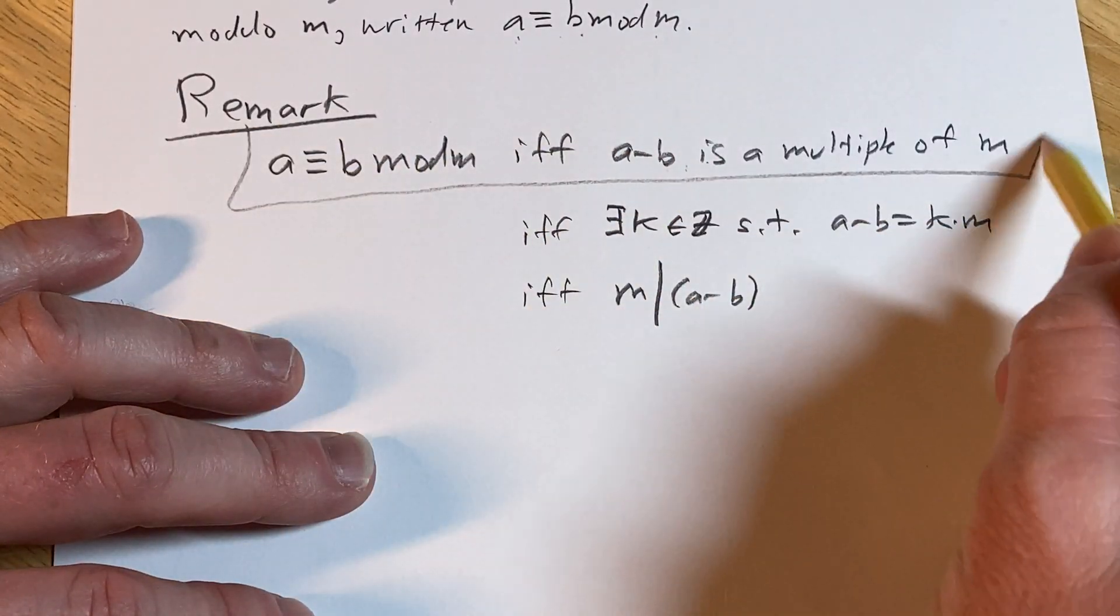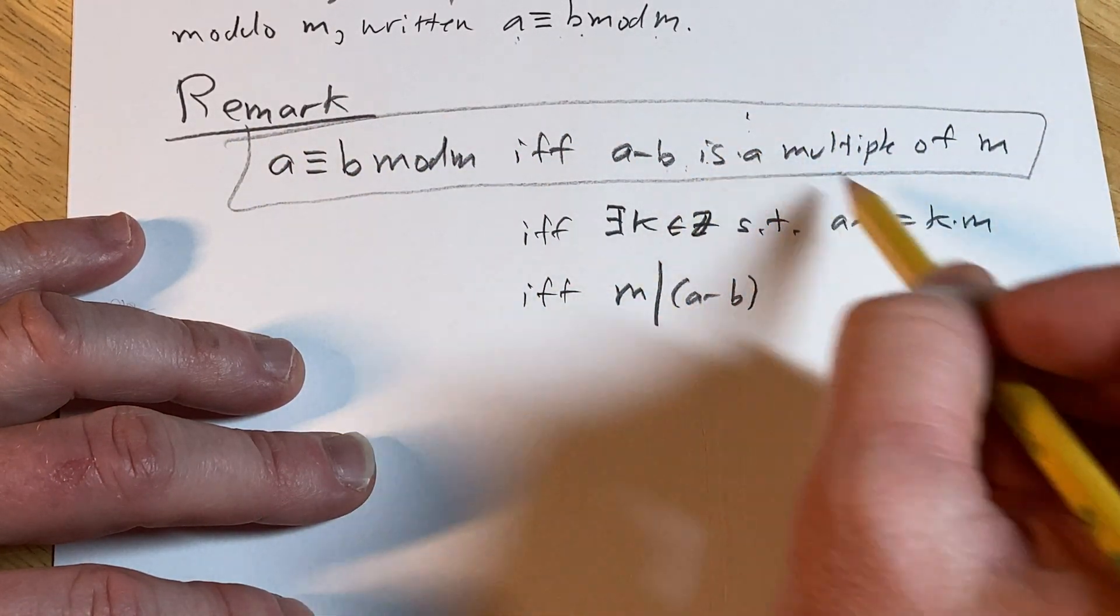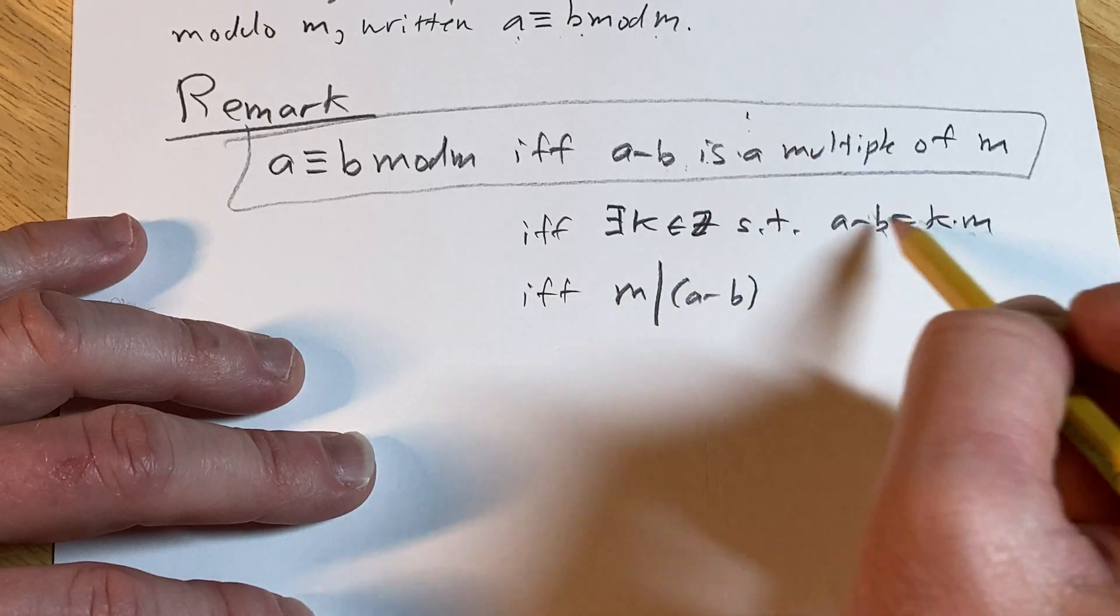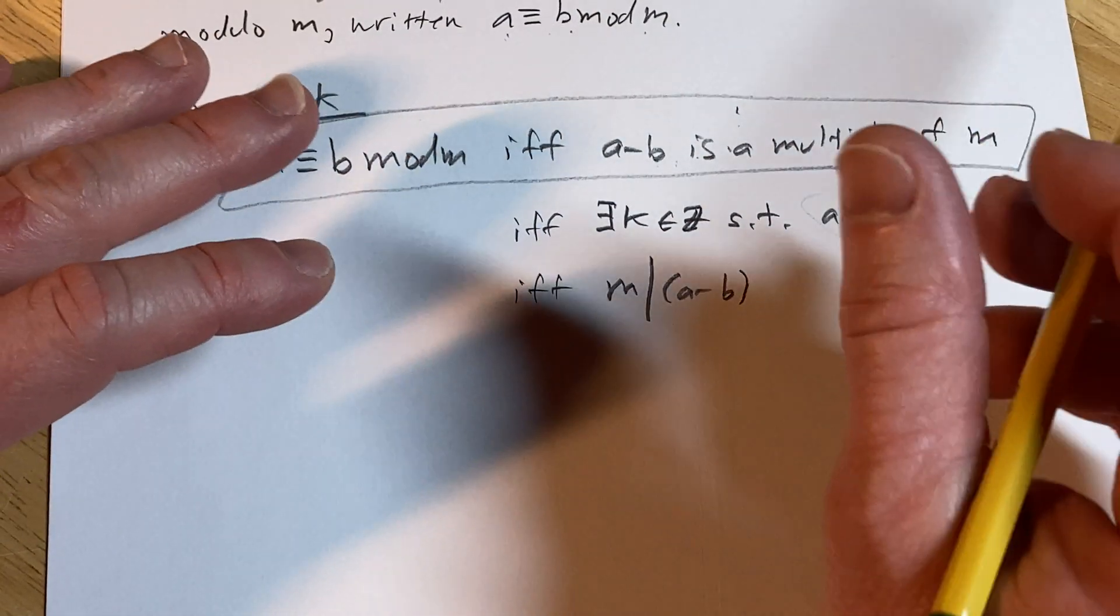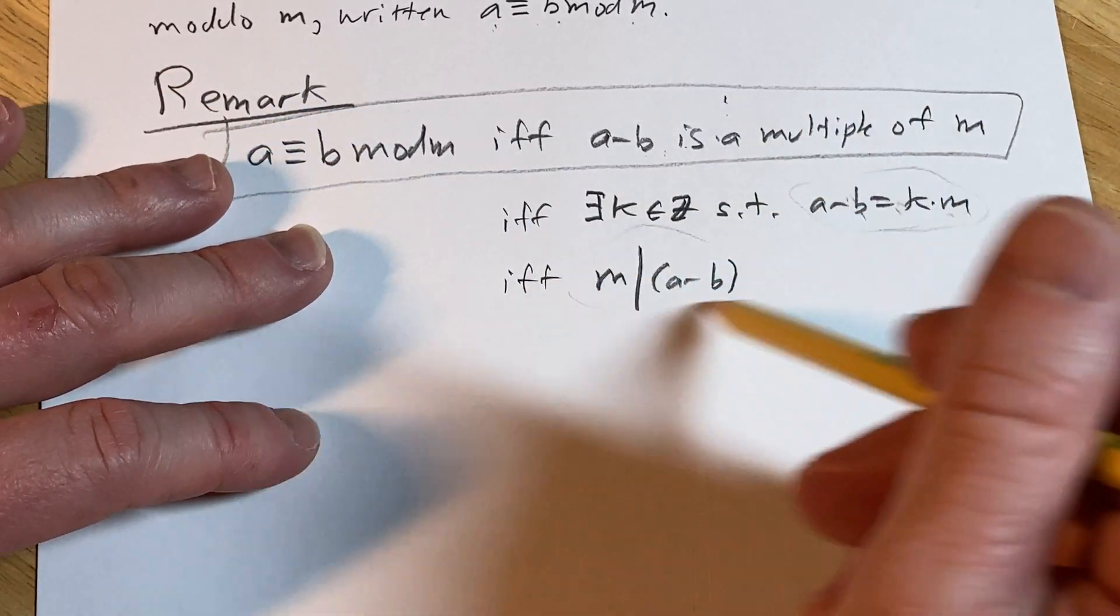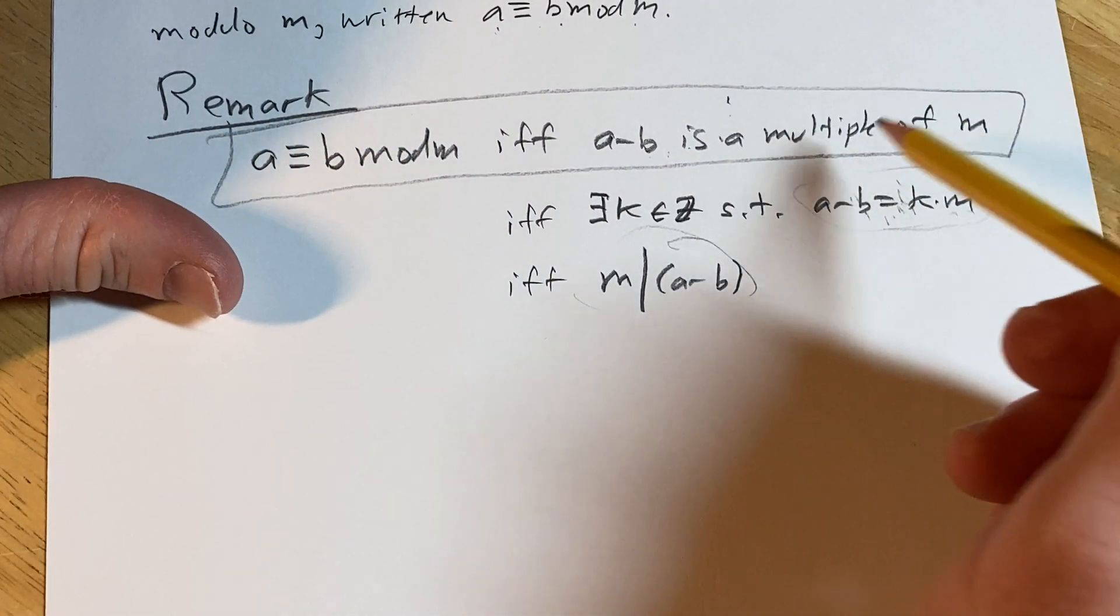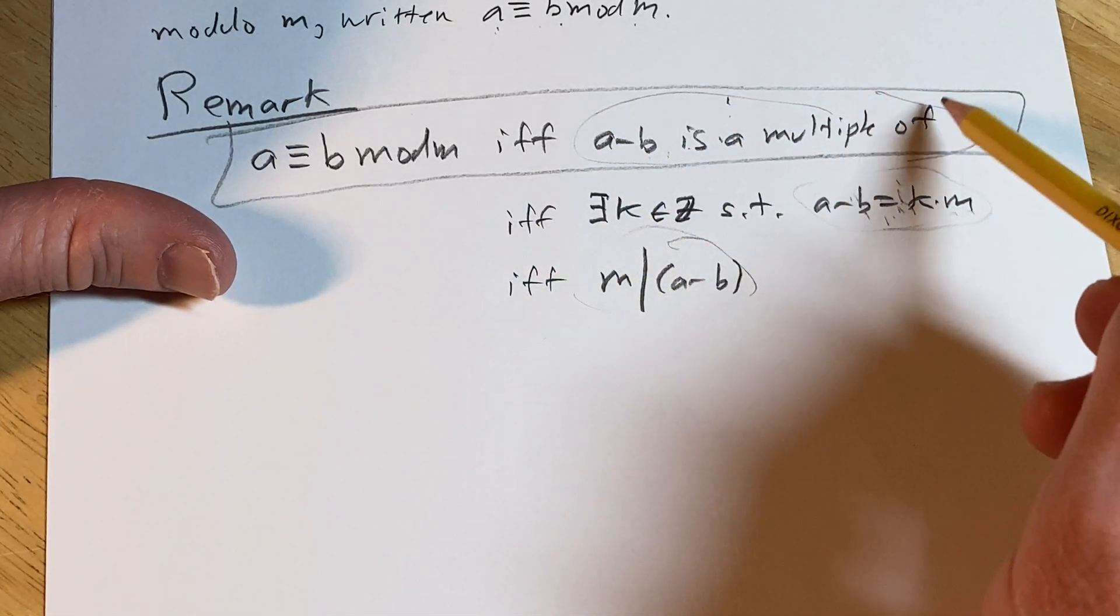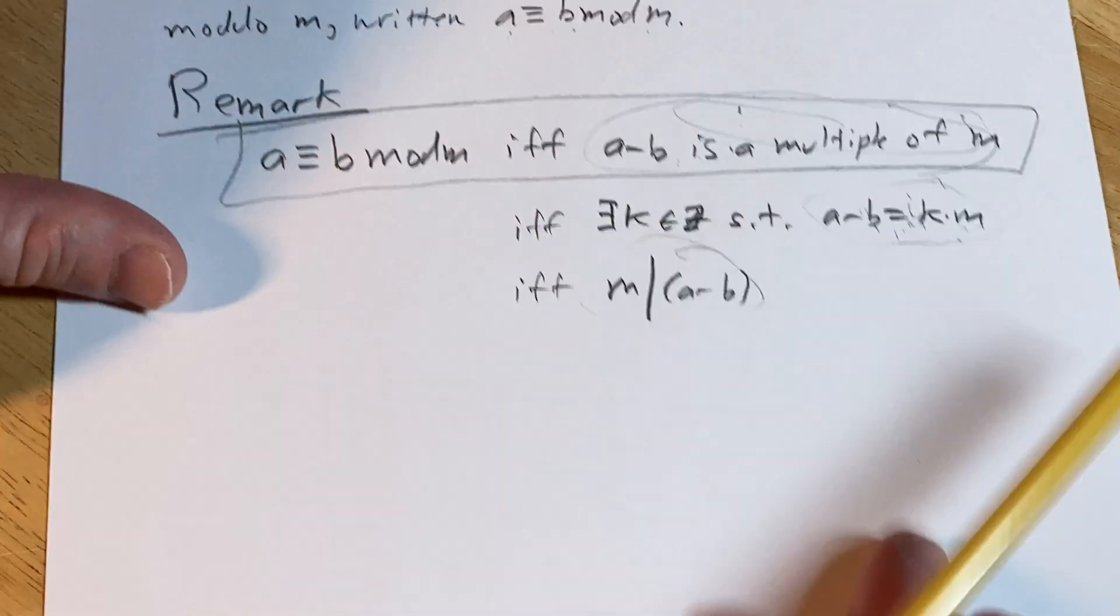The most powerful one is this equation form, because it's very intuitive. You can add equations, subtract equations, manipulate equations. It's easier to manipulate equations than divisibility notation. That's why this language is nice - you can say it and know what it means, and it's just good to work with.